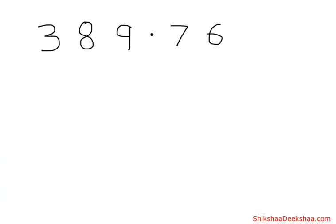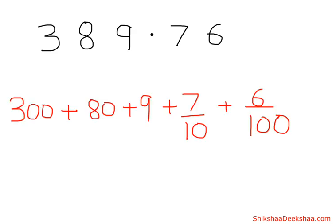So if we have 389.76, its expanded form would be 300 plus 80 plus 9 plus 7/10 plus 6/100. It's really easy, isn't it?